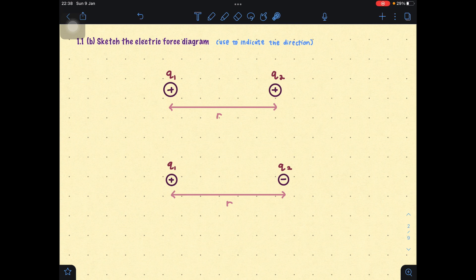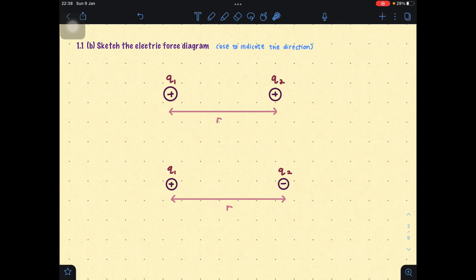Next one is the second learning outcome, which is to sketch the electric force diagram. Sketching here is very important because it is used to indicate the direction of the force, but it is very easy. We only look at 2 situations: when we have the same charge, positive-positive or negative-negative. Charges that are the same will repel each other, meaning the direction will be opposite. And charges that are different, positive and negative, they will attract each other. So direction will be towards each other.